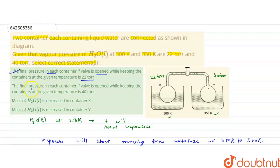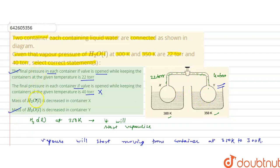The second statement will be incorrect because it states the final pressure in each container when the valve is open while keeping temperatures at their given values is 40 torr — it will not be 40 torr, it will be 22 torr. Statement C is also wrong — it says mass of water liquid decreased in container X, but it actually decreased in container Y, because due to higher temperature that water has been vaporized. So statement D is also correct. The correct answers to this question are options A and D. I hope you understood the solution, thank you.